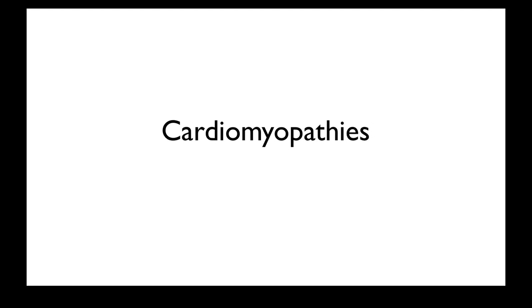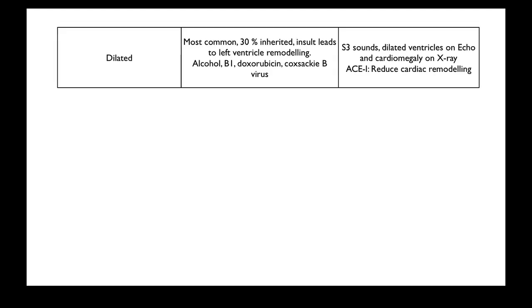A discussion about cardiomyopathies, which is a disease of the myocardium itself. You have dilated cardiomyopathies, which is by far the most common, and 30% of them have an inherited component, which means you have a risk of developing cardiomyopathy. You might not necessarily develop it, but if you go on to have an insult such as an ischemic event, toxins, or medications such as doxorubicin for treating cancers in oncology patients, then you're at risk of developing a dilated cardiomyopathy.